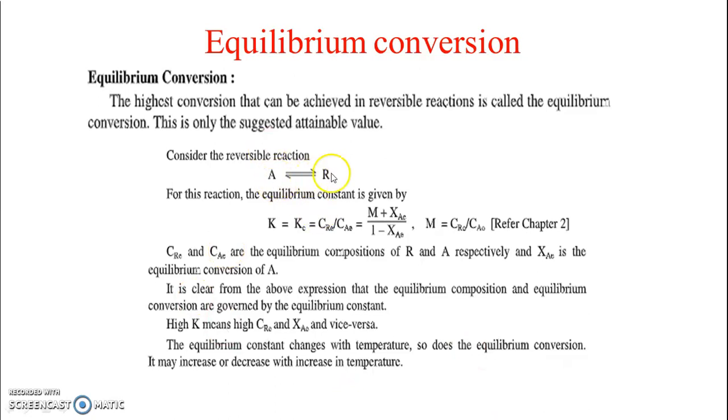Now this is a reversible reaction, A reversibly giving R. Here you can use this equation from chapter number 2 to find the equilibrium constant. E indicates equilibrium, R and A, these are the components of the reaction. A is a reacting component, R is a product. Now M indicates the molar ratio, CR0 upon CA0.